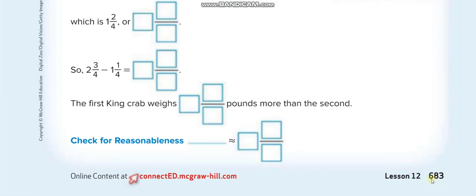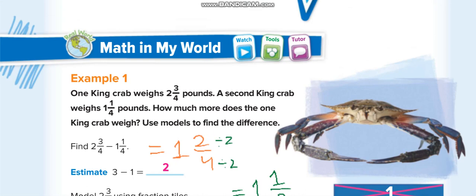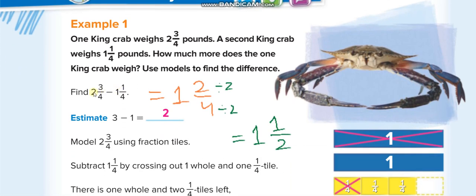In this lesson, we are going to subtract mixed numbers like this one you can see here: 2 3/4 minus 1 1/4. You know that what are mixed numbers - when we have a whole number and fraction together, we call it a mixed number.